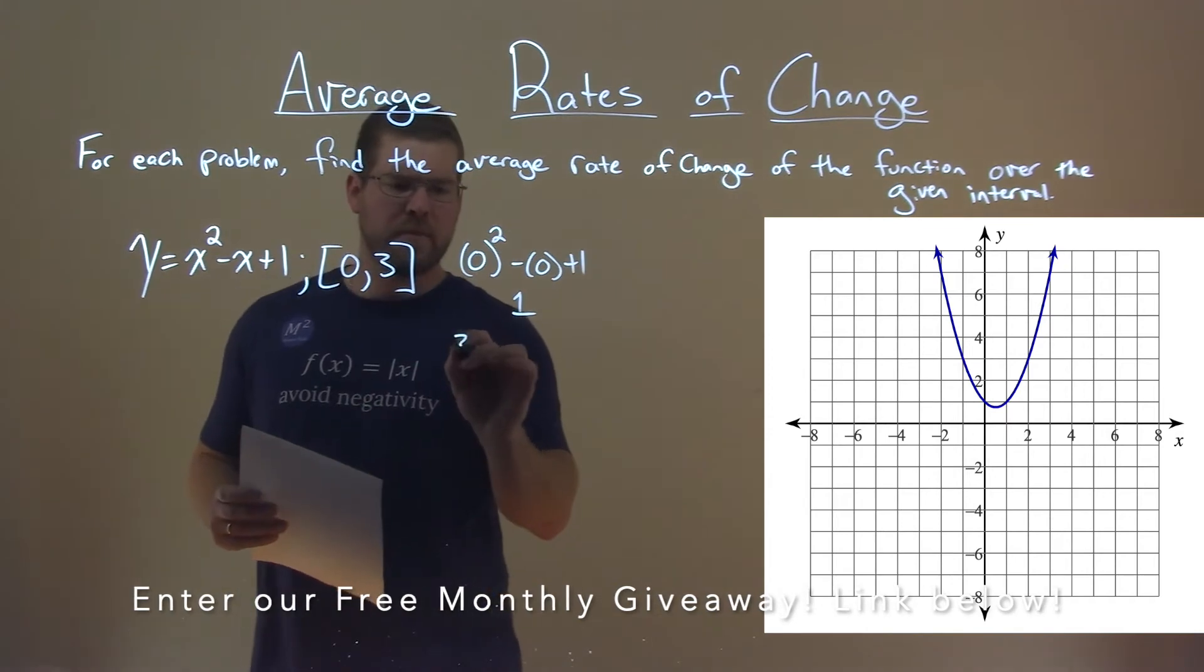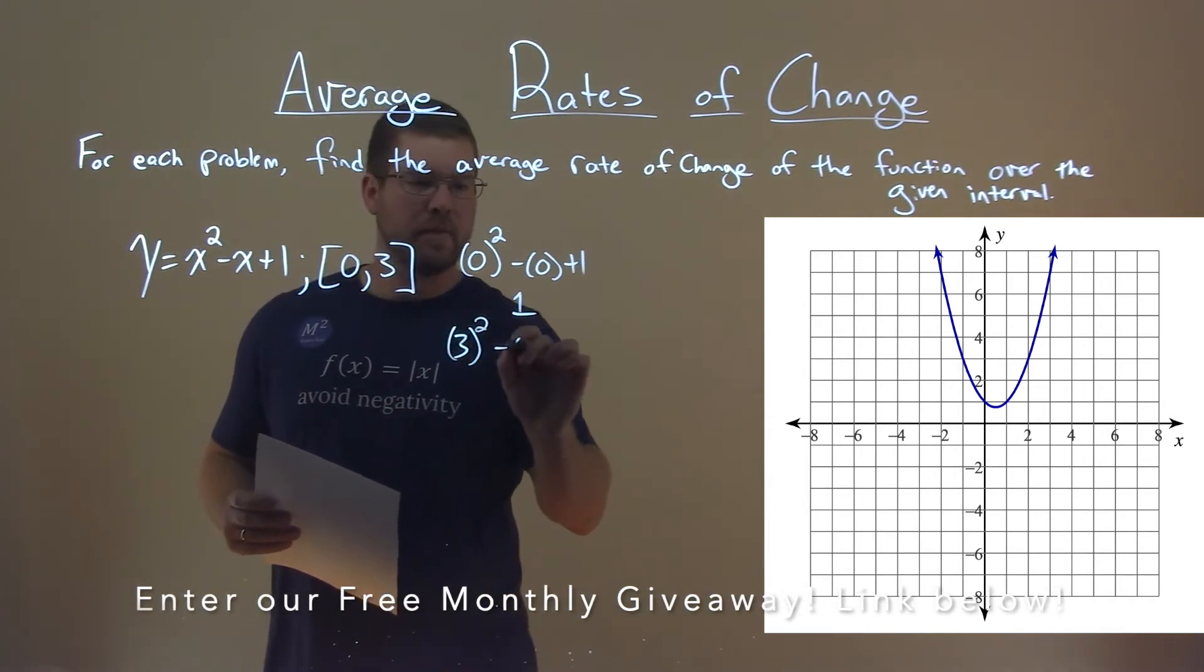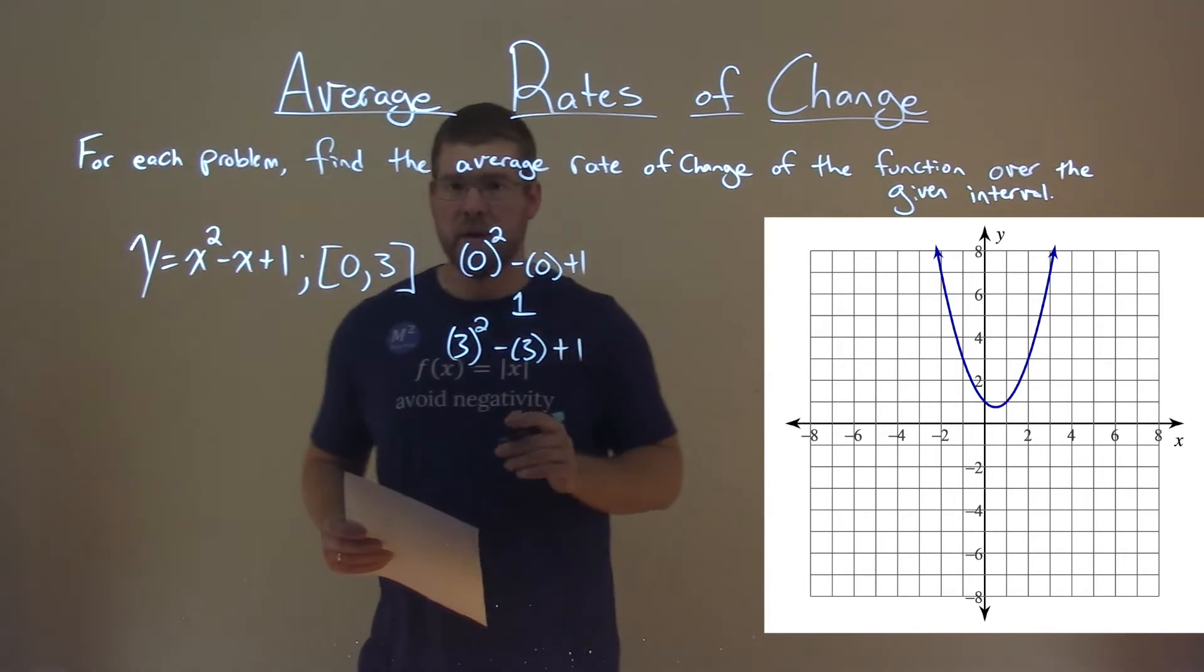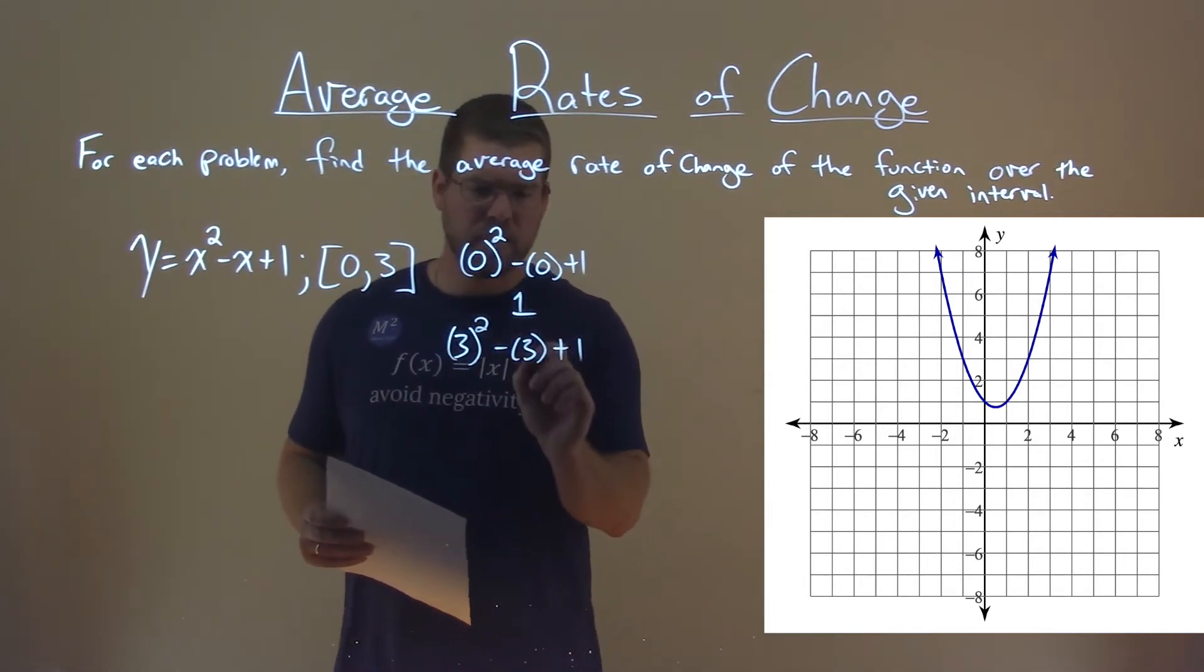Let's do the same thing with the 3 now. 3 squared minus 3 plus 1. 3 squared is 9, minus 3 is 6, plus 1 gives us 7.